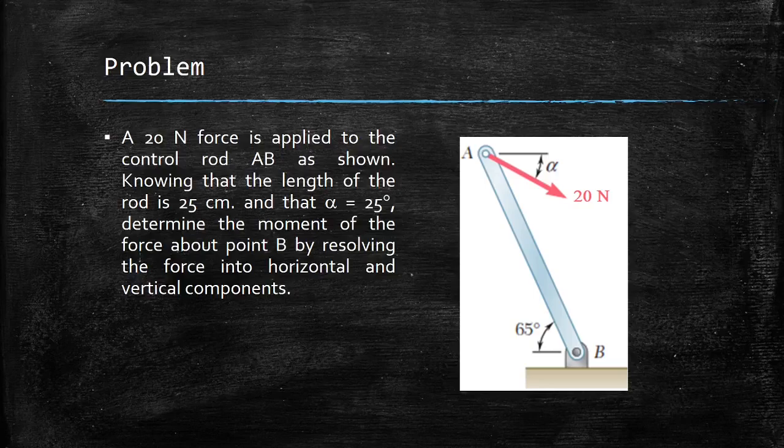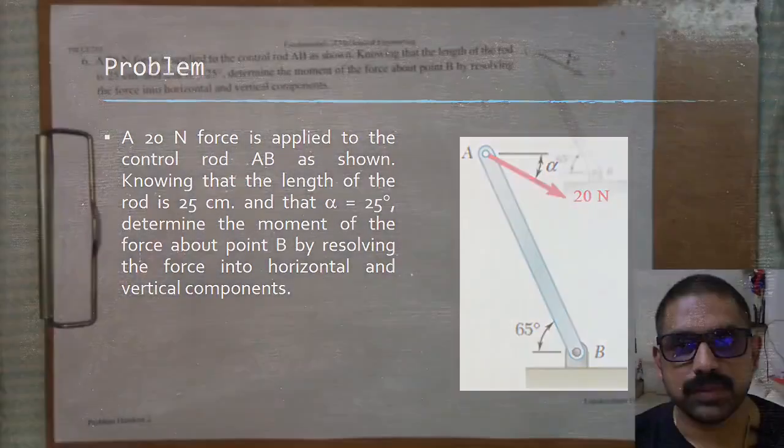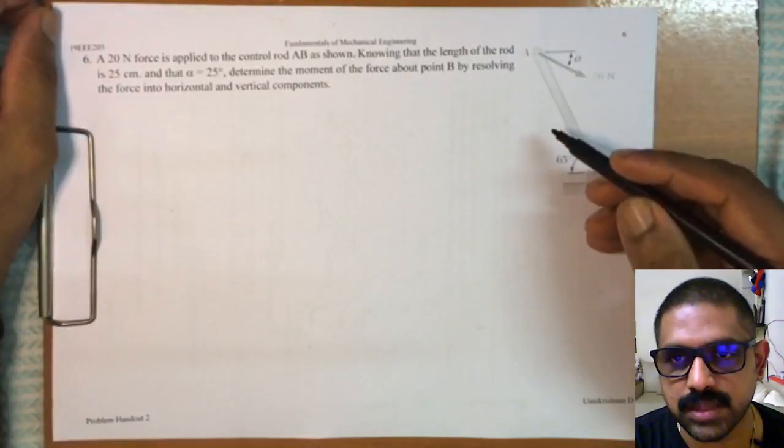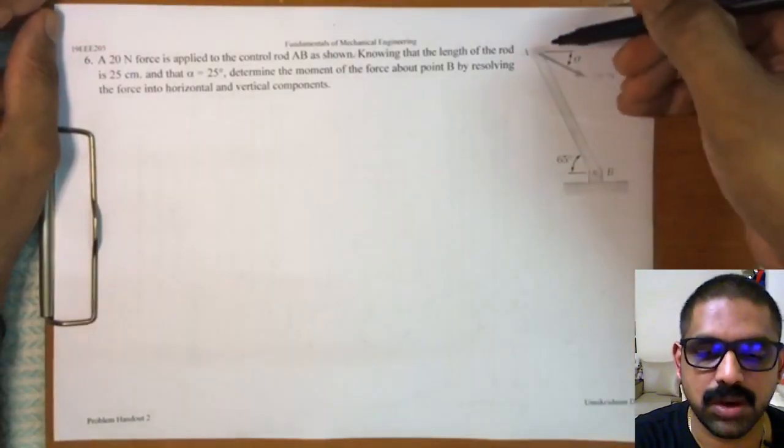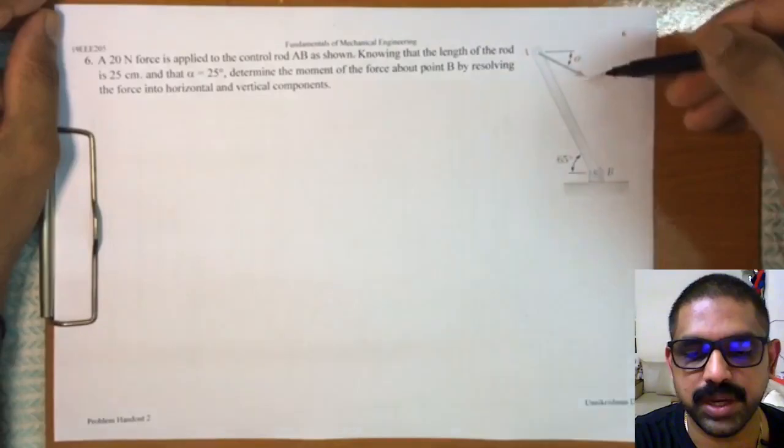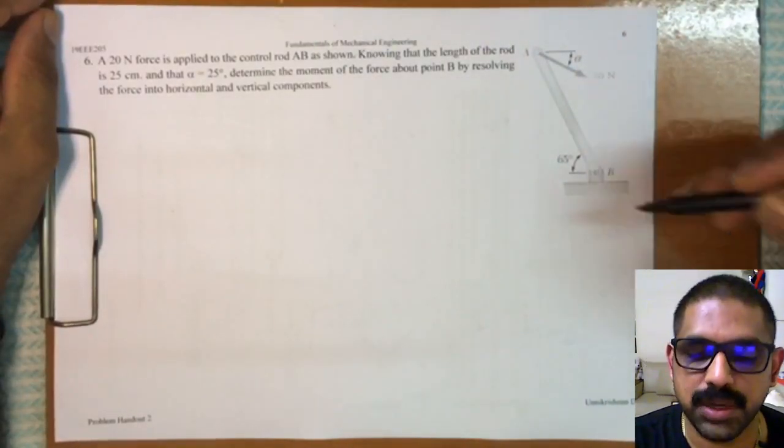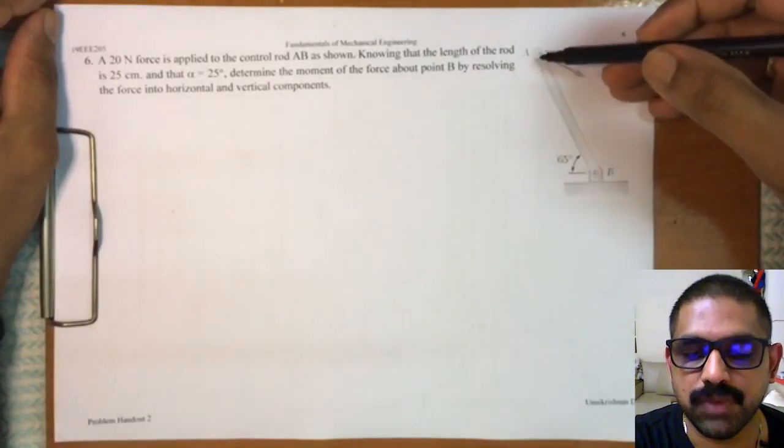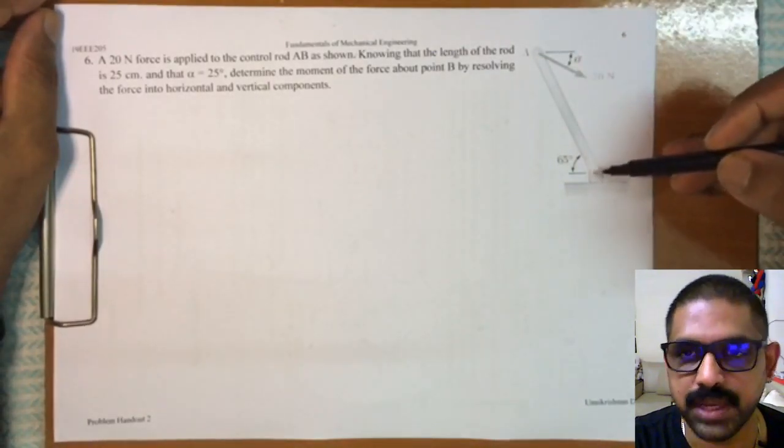Determine the moment of the force about point B by resolving the force into horizontal and vertical components. So let us see how we can solve this problem. For that, let us consider this case, and here I have this rod AB and I have the force acting at point A.